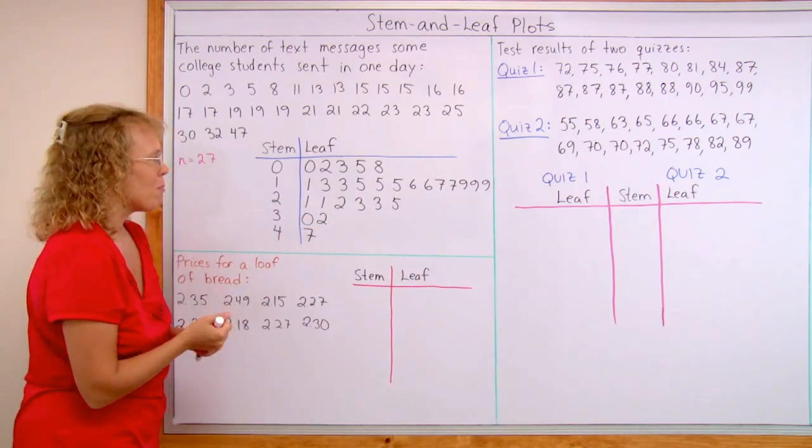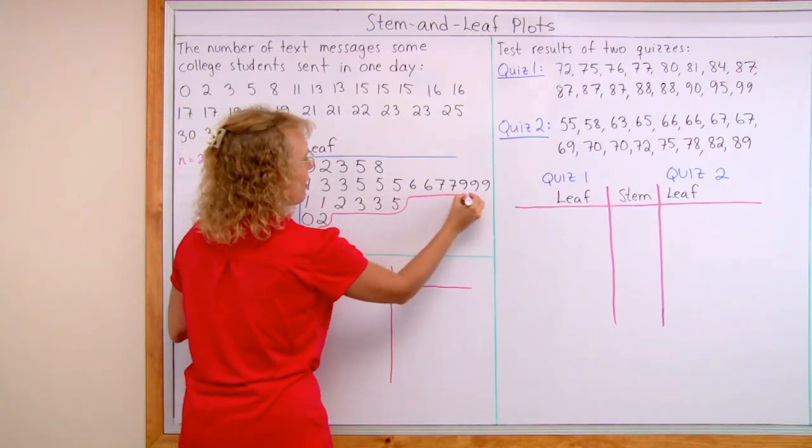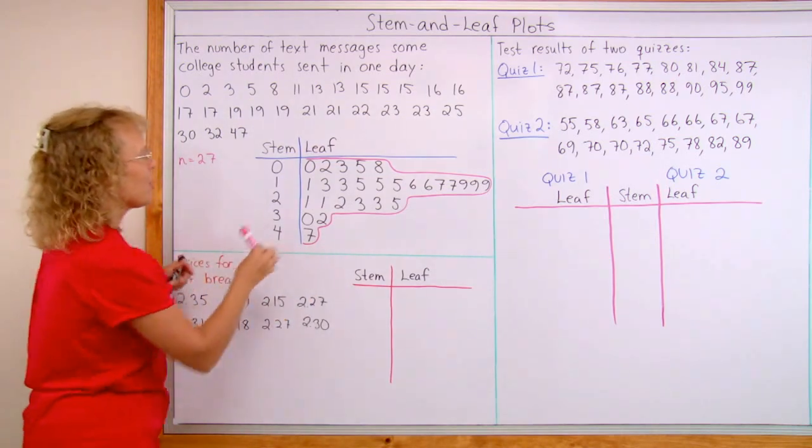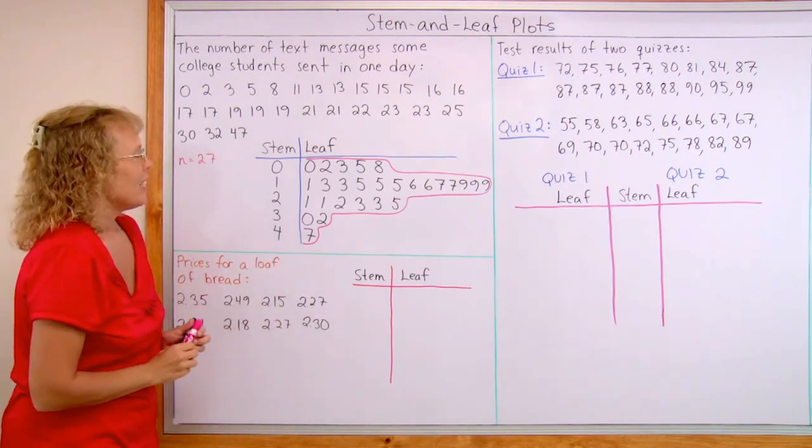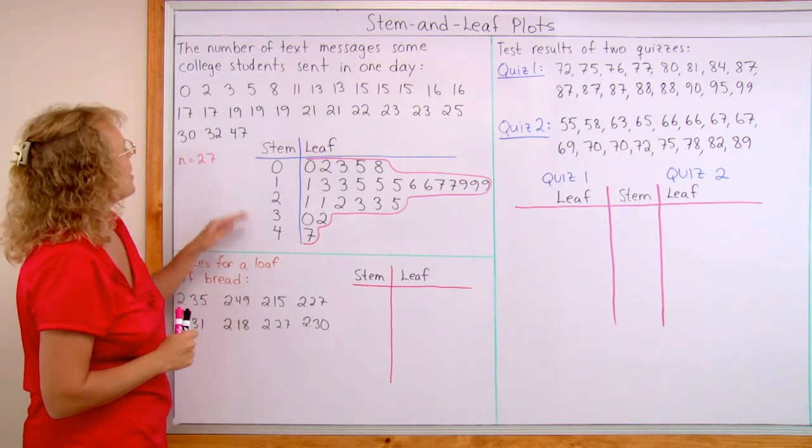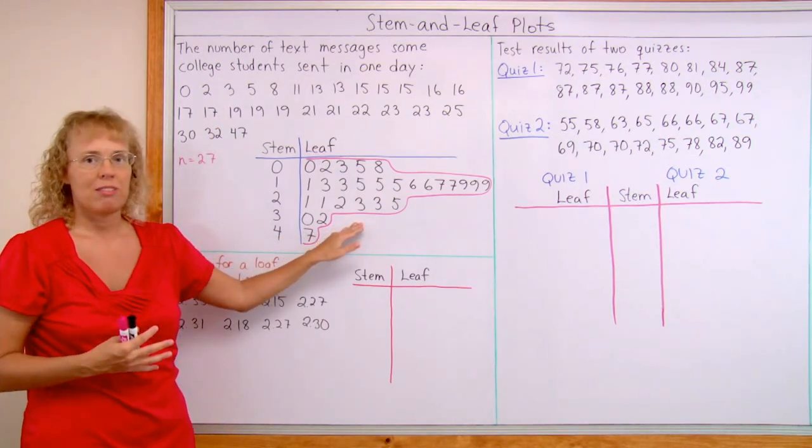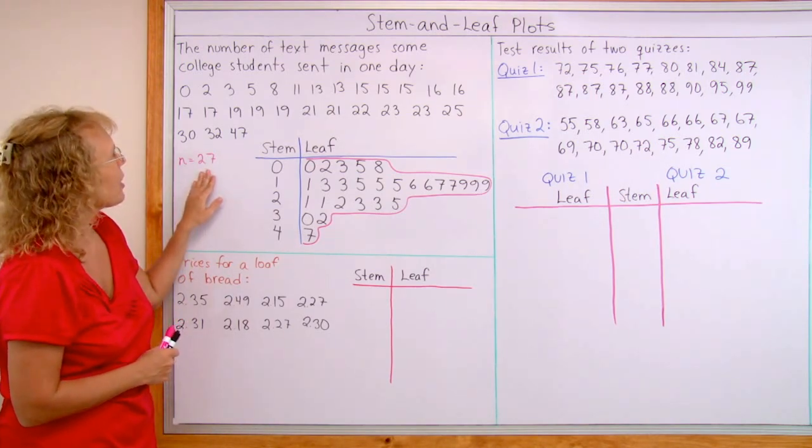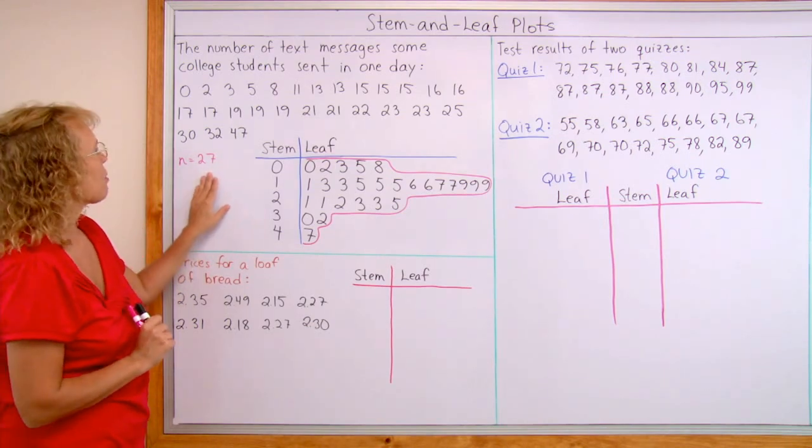And now it resembles a bar graph sideways. If you kind of look at it like this, turn your head like that, you will see the peak of the data being here in the tens. And now we can also figure out the median. Since this data is in order already, I can use this, or I could use the stem and leaf plot itself to find the median. There's twenty-seven entries here, or items. So it will be the fourteenth item that will be the median.